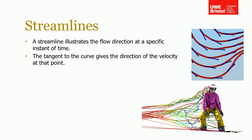You can see the image at the bottom here — this is a numerical computational fluid dynamics (CFD) evaluation of the flow around this snowboarder. You can see that the flow coming off his helmet, knees, and everything is quite chaotic — we're talking about turbulence, which we'll discuss more later in the lecture. This is just a snapshot in time showing where the flow is at any particular moment. Obviously, this would be quite unsteady and changing with time, but that's the advantage of a streamline.